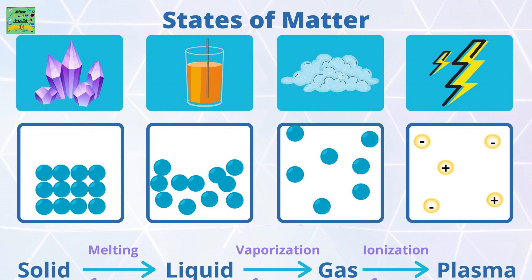Please remember this process: a solid starts melting to form liquid, a liquid vaporizes into gas, and gas ionizes to form plasma.